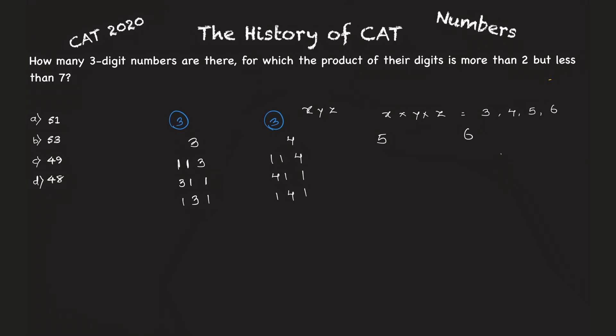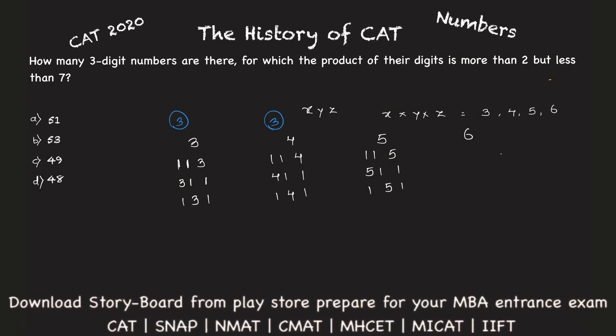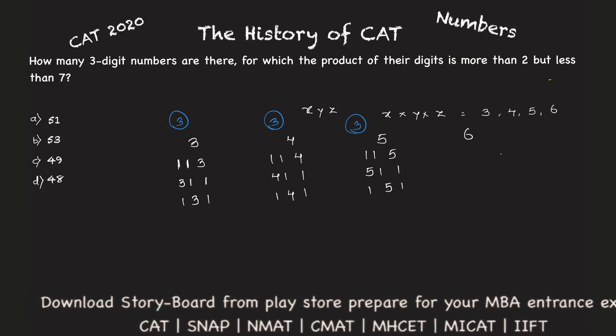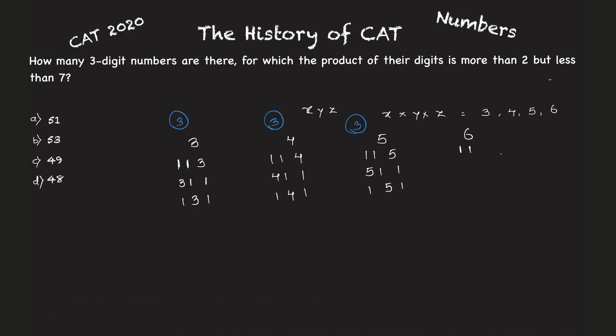Similarly with five, I can get one one five, five one one, and one five one. Again three numbers with five. And with six, I can get one one six, six one one, or one six one. Again three numbers. So till now I have 12 numbers whose product is more than two but less than seven.